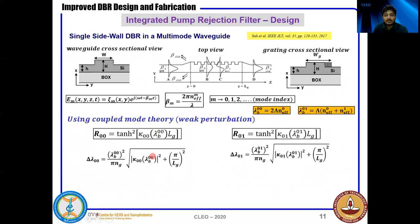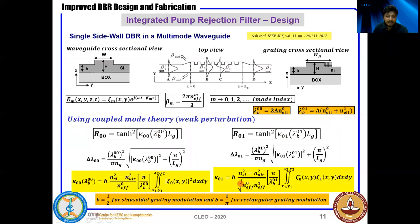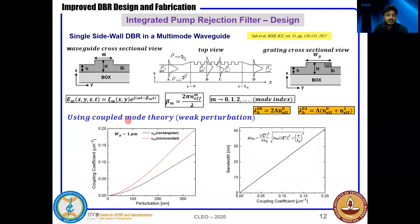This is the corresponding rejection and bandwidth for the two bands, along with the coupling coefficients. We are interested in kappa_01, which is due to the coupling between the fundamental mode and the first-order mode, integrated over the perturbation region. The coupling depends on the type of perturbation — we consider sinusoidal and rectangular gratings. Using coupled mode theory, we see that for sinusoidal gratings the coupling coefficient is higher, but increasing the coupling coefficient also increases the bandwidth, so there is a trade-off in choosing the perturbation type and modulation depth.